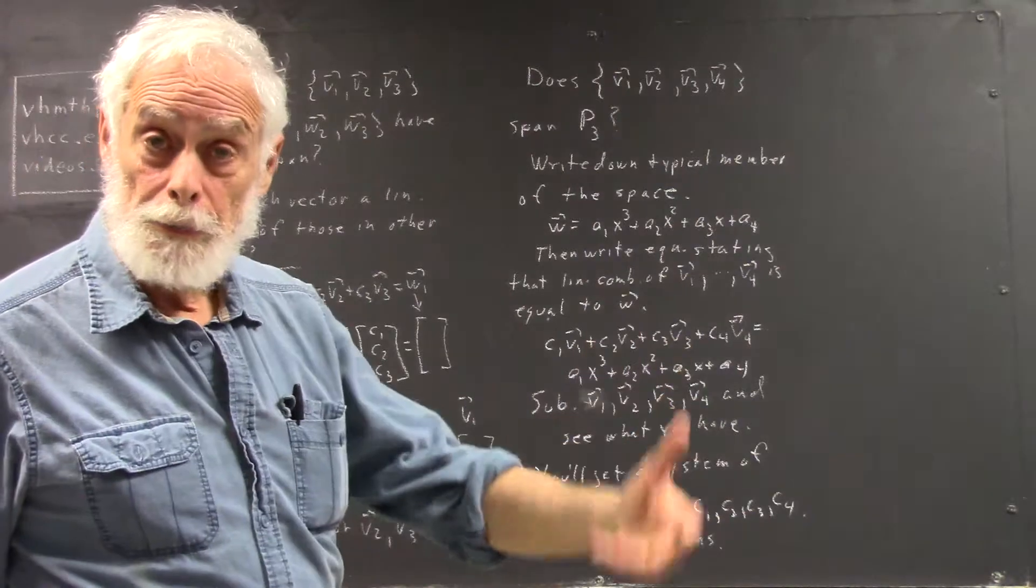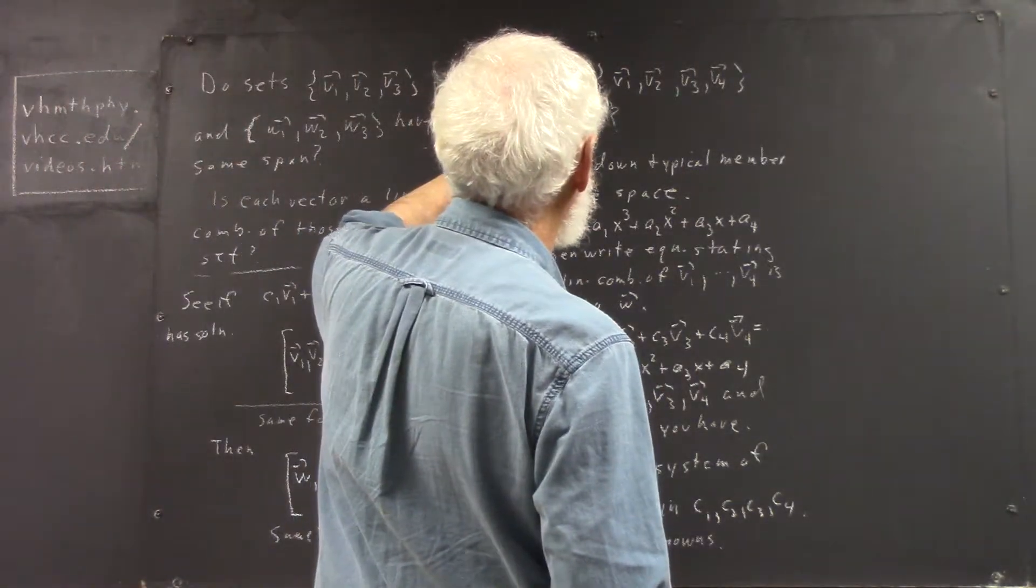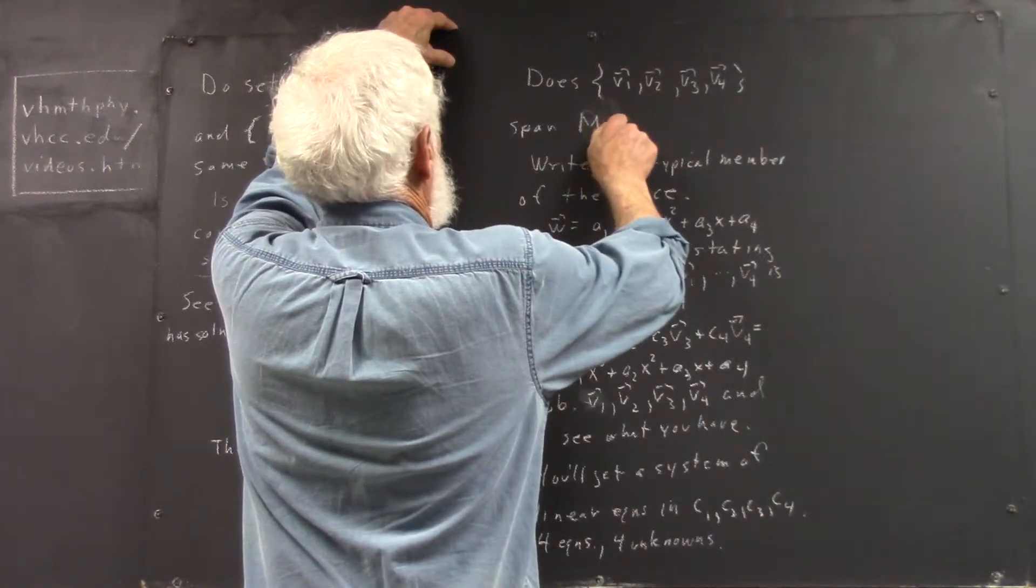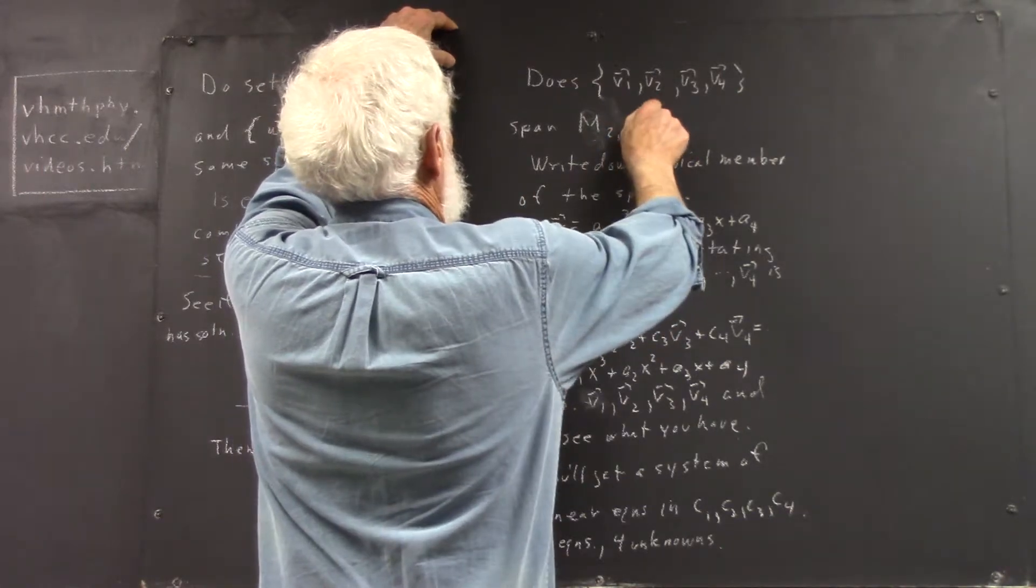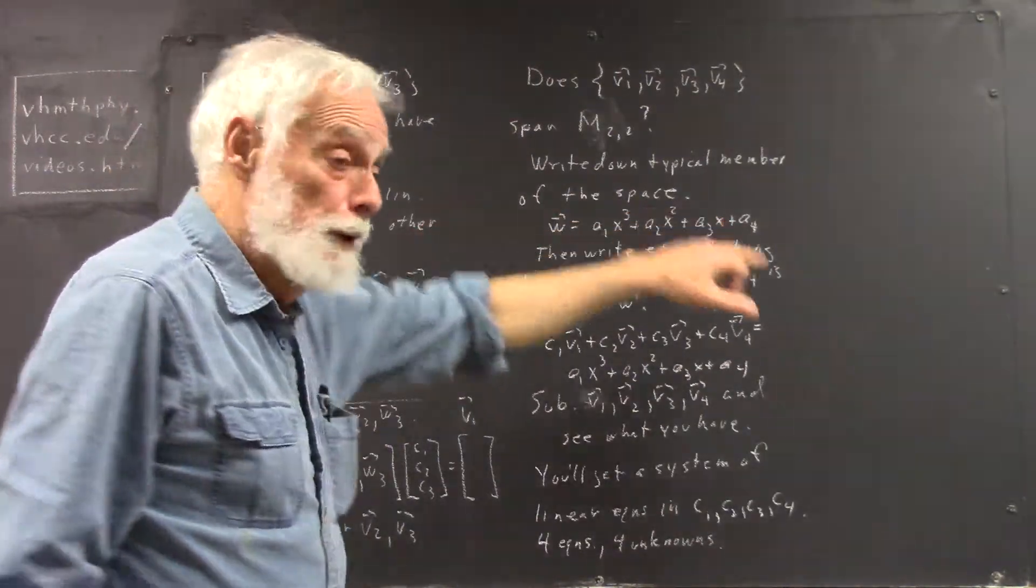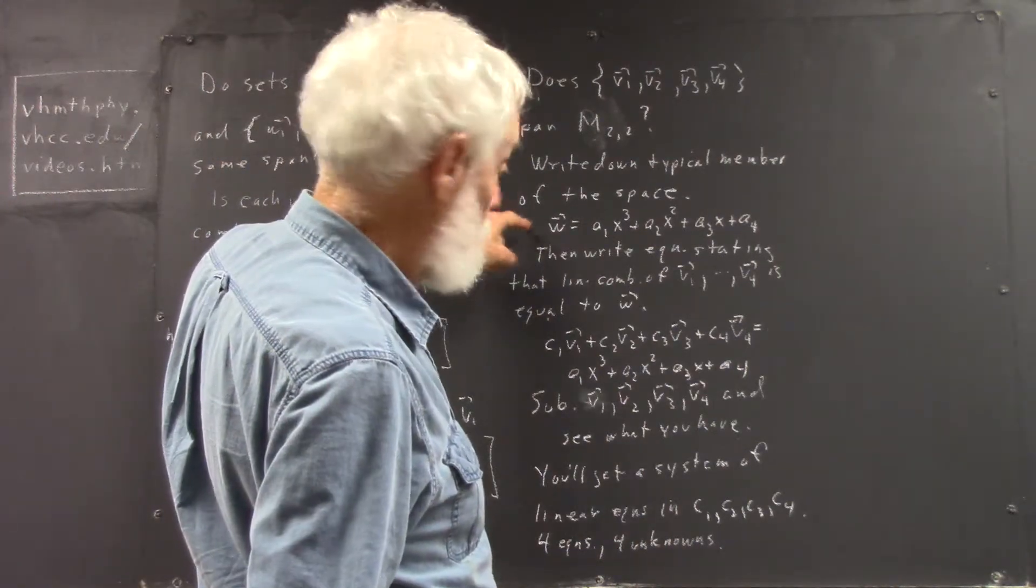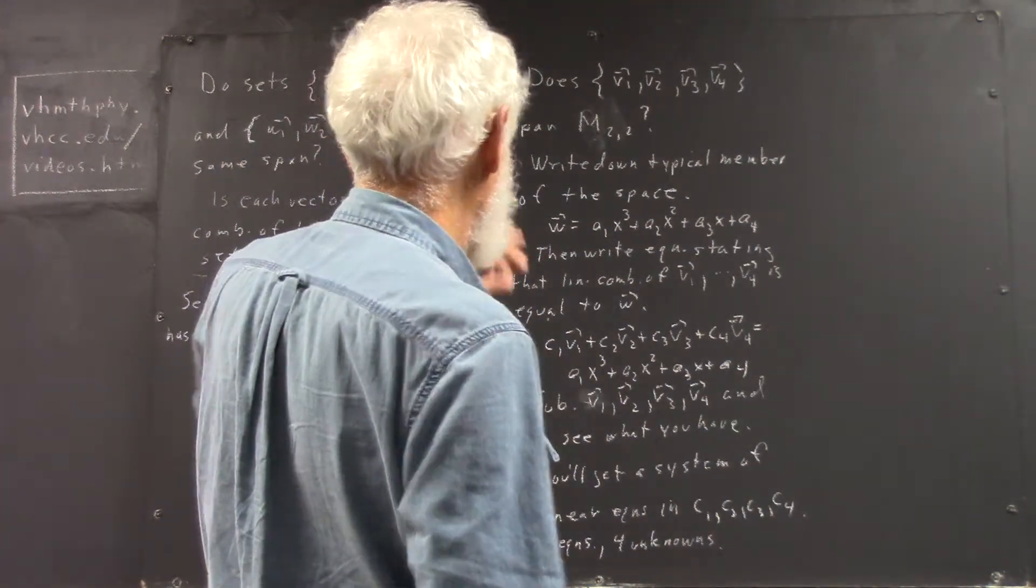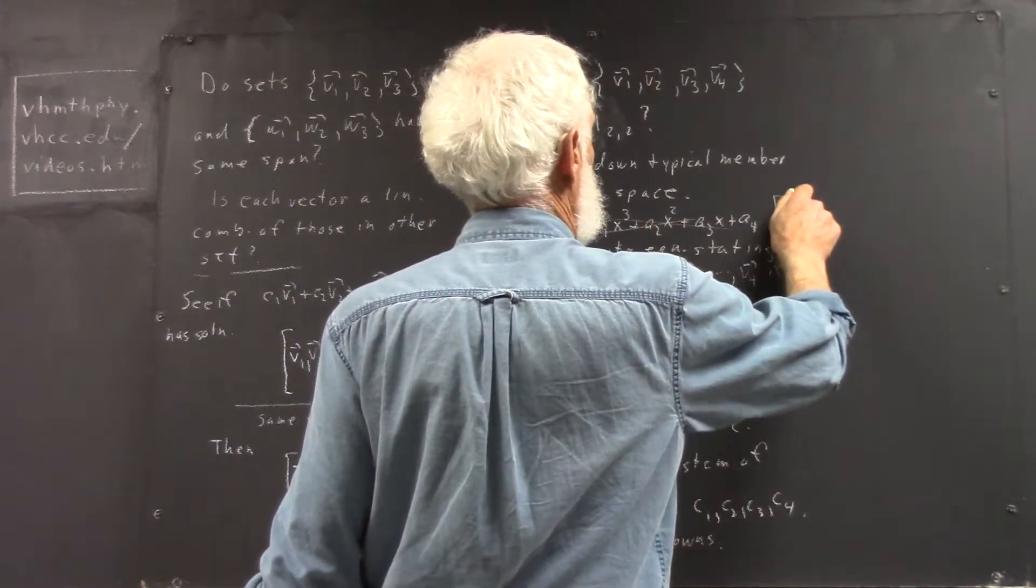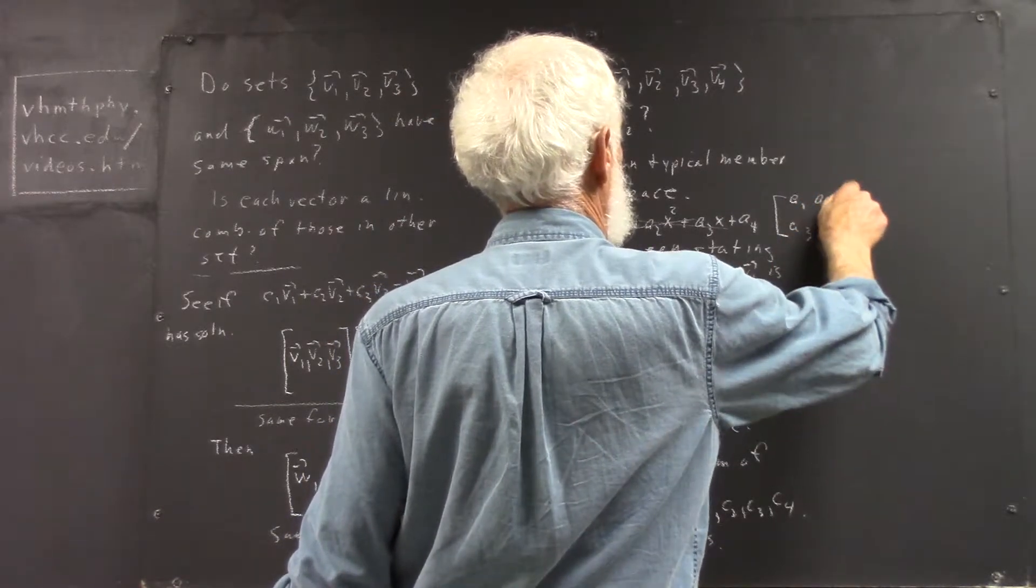What if this was some other space? What about M22? Well, then your typical vector in M22 would not be a polynomial, would it? So you would have to write some other vector. And that could be A1, A2, A3, A4, if you wish, or A, B, C, D,